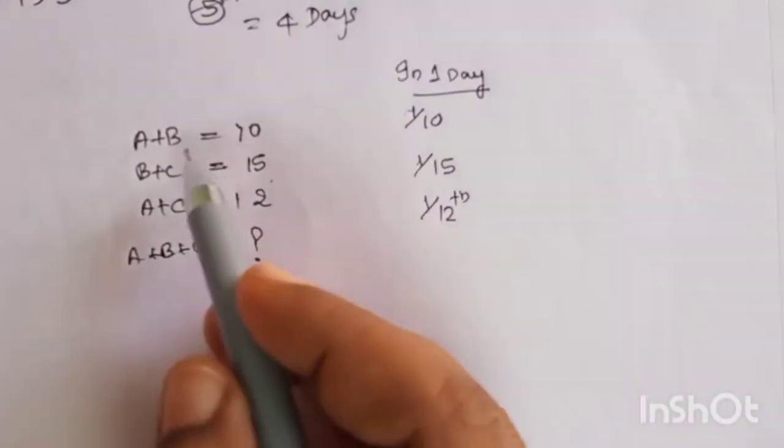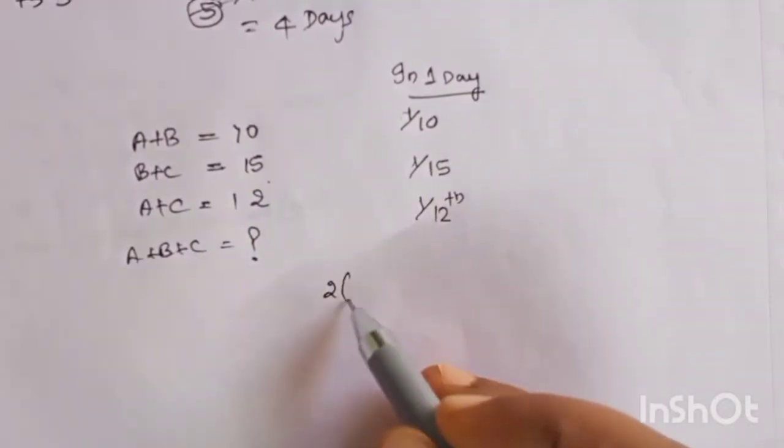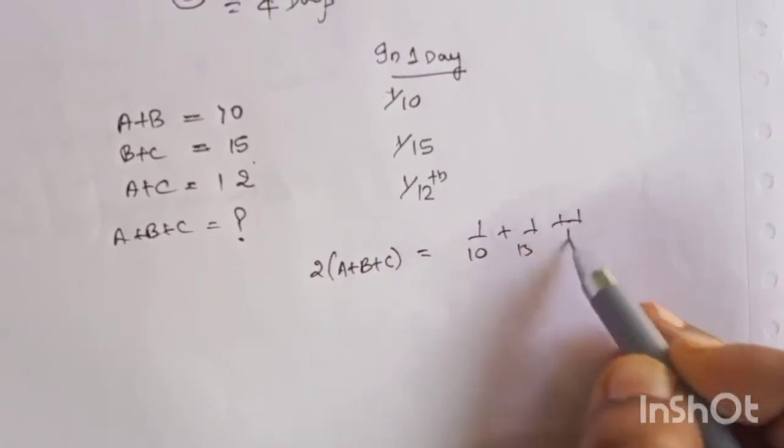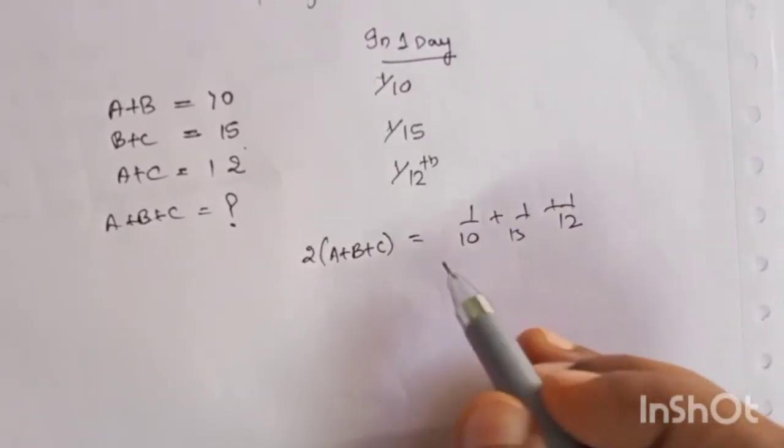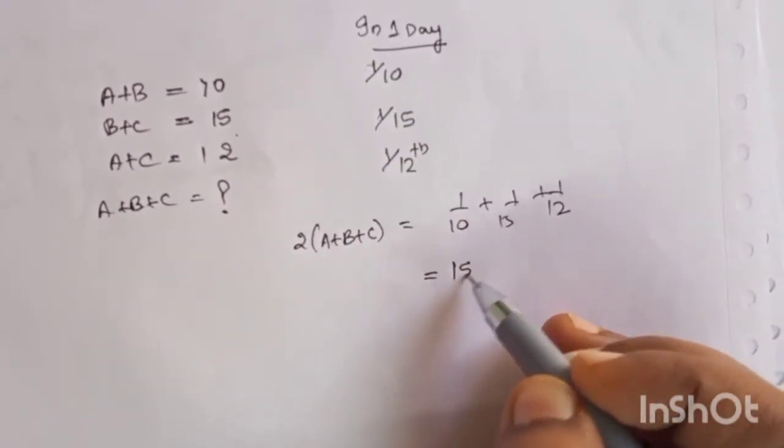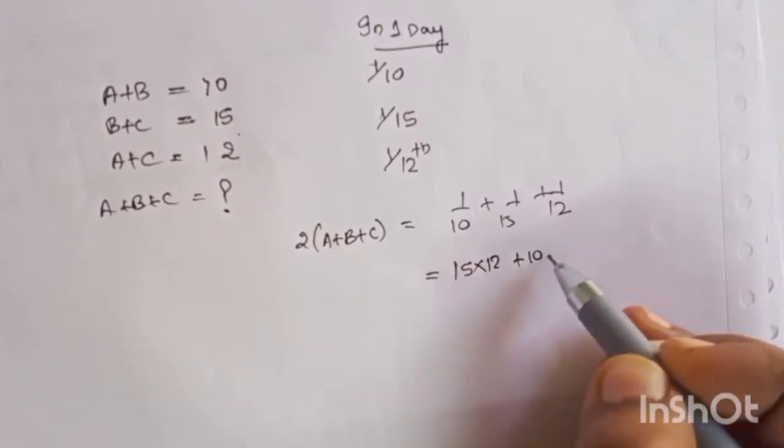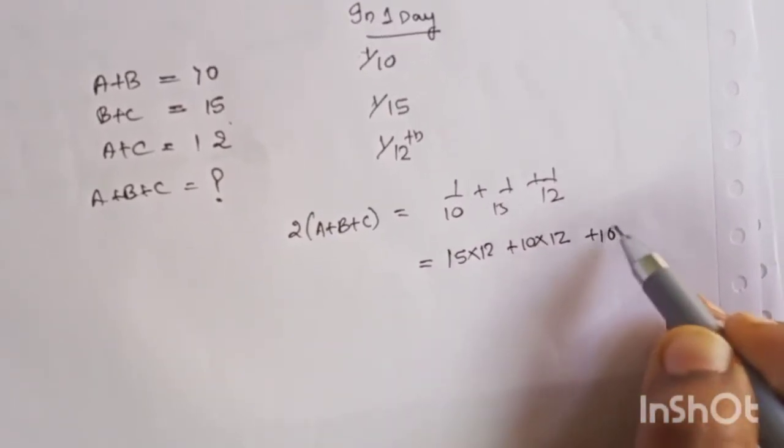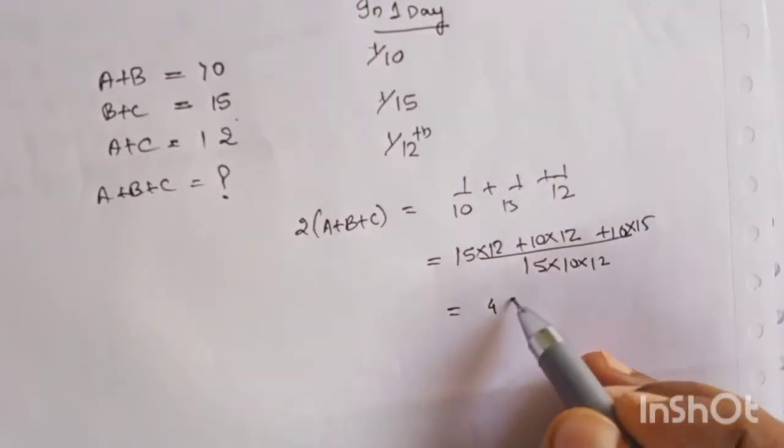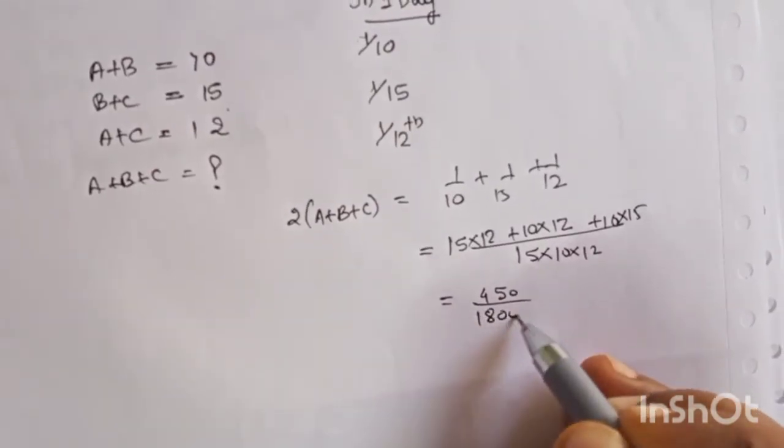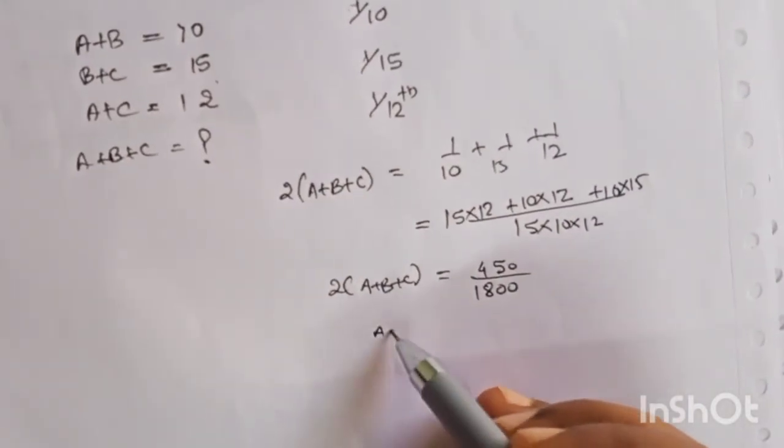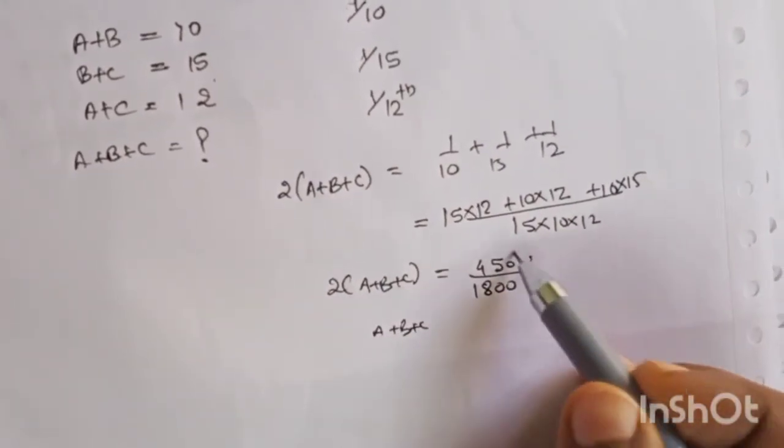So the work done in one day by all of them together, adding the left side you will get twice A plus B plus C is 1 by 10, 1 by 15, 1 by 12. So work done by twice of A plus B plus C in one day equal to when you solve this: 15 into 12, 10 into this, and then 10 into 15. And here it will be 15 into 10 into 12, so this comes out to be 450 by 1800, twice A plus B plus C.